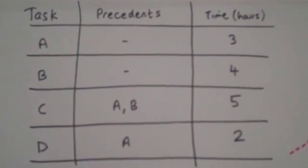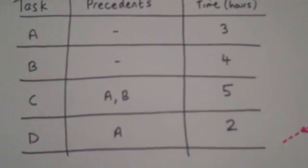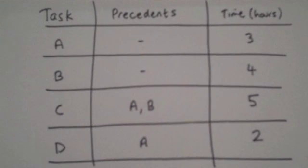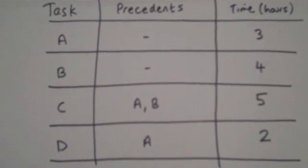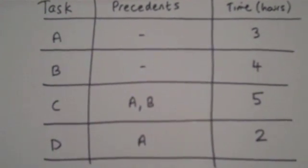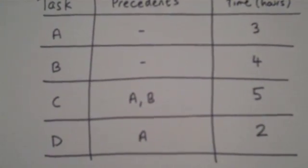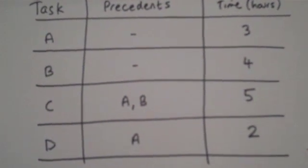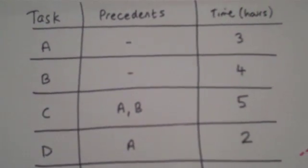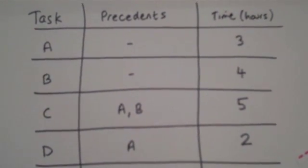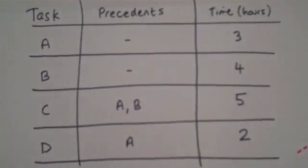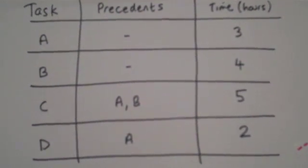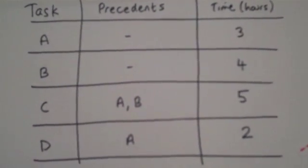We're going to do some critical path analysis. I've got four tasks: A, B, C, and D. A and B are my starting tasks. Task C requires both A and B to be finished first — these are called precedents. And task D requires A to be finished.